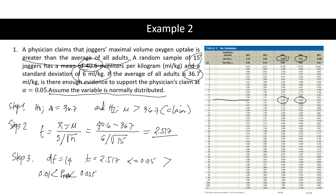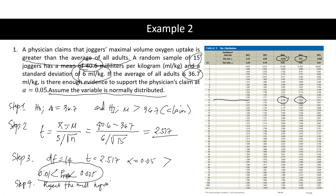Step 4: Compare the p-value to alpha. The p-value falls in the interval 0.01 to 0.025. Since the p-value is less than alpha = 0.05, we reject the null hypothesis. The claim is H₁, and since we reject the null hypothesis, we support the claim.